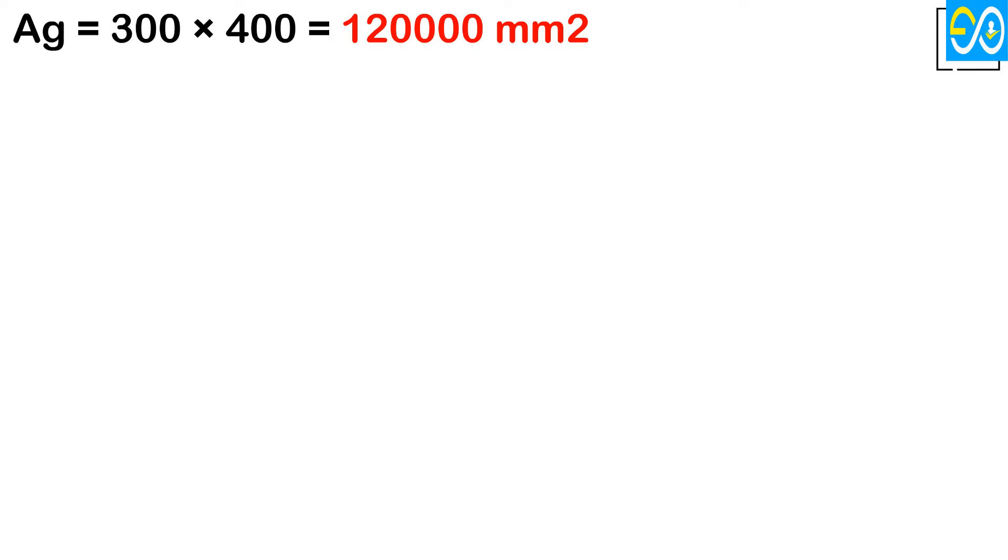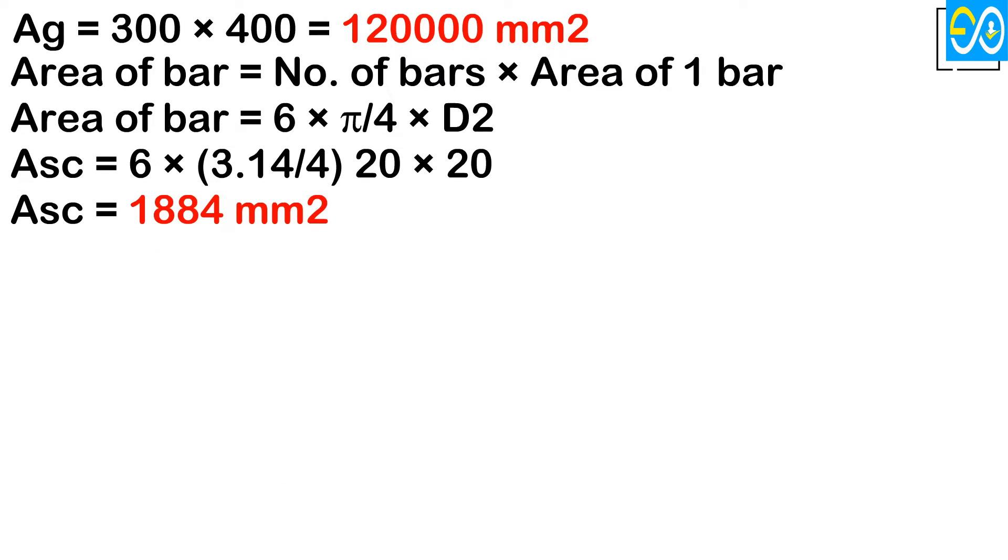Area of bar equals number of bars times area of one bar. Area of bar equals 6 times pi per 4 times diameter squared. Asc equals 6 times 3.14 per 4 times 20 times 20. Asc equals 1884 square mm.